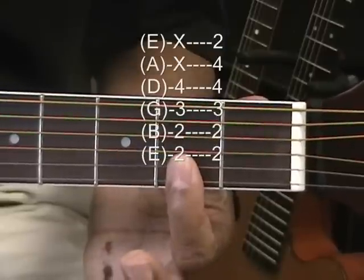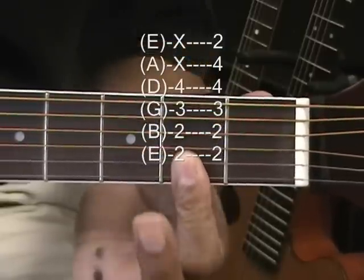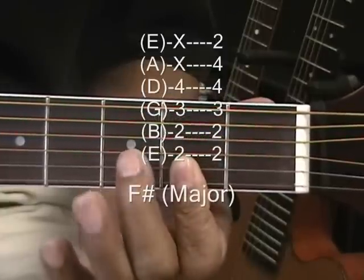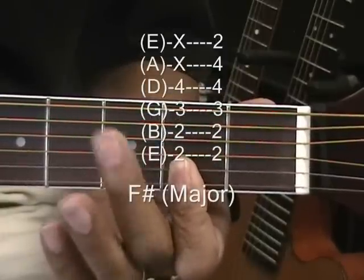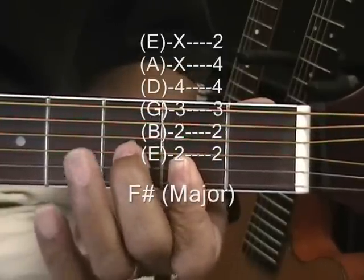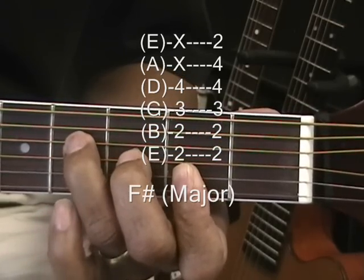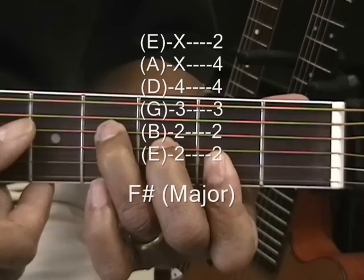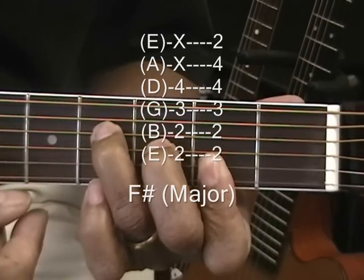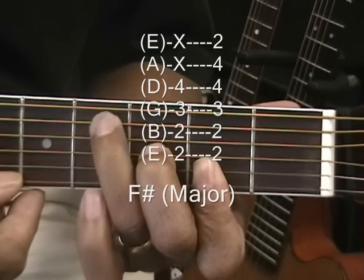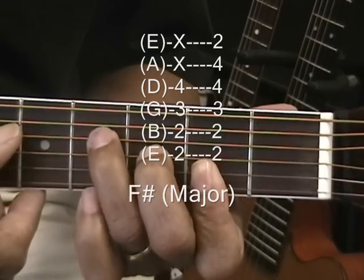We're holding down the B and the high E string at the second fret with the first finger. Bringing the middle finger to the G string third fret, the ring finger to the fourth fret on the D string, and we strum that from there and butt up against this string so it doesn't sound.